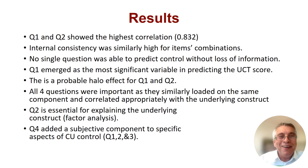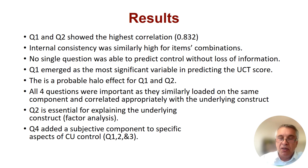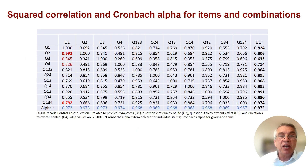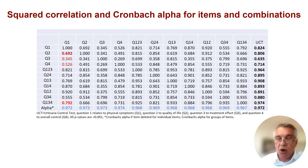Question one was the most significant variable for predicting the UCT score, but all four questions are important and needed. If you're interested in the details, please refer to this table, where you can see the different relations, the correlations, and the Cronbach's alpha for items and their combinations.